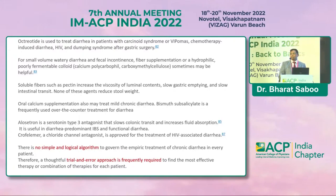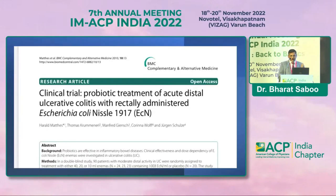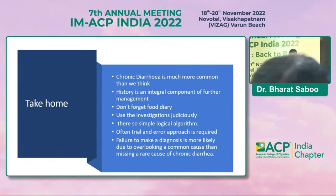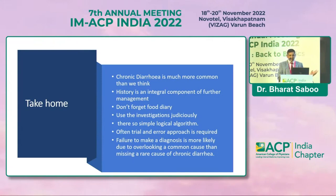The take-home message: chronic diarrhea is much more common than we think. History remains the integral component of management, and the food diary should not be forgotten. Investigations should be used judiciously. Trial and error is the only way for empirical therapy, and failure to make a diagnosis is more likely due to overlooking a common cause rather than searching for a rare one.